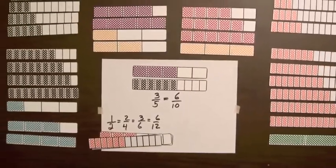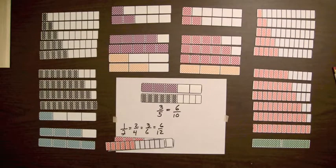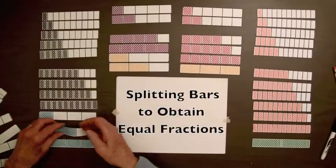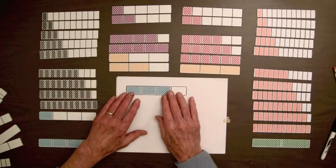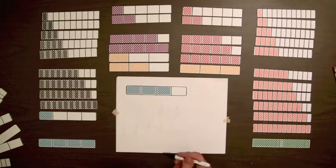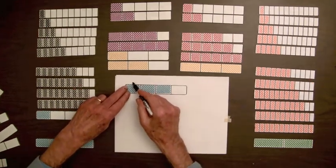Next, we'll look at a second method of illustrating equality of fractions that involves splitting the parts of a bar. This bar has four equal parts, three parts are shaded, and if we split each part of this bar into two equal parts...